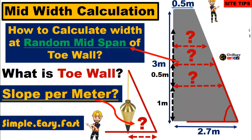Hello guys, welcome to my channel Saveology, the study of Saveal Engineering. In this video, we are going to calculate the mid-width at random heights of a toe wall. We will answer how to calculate mid-width at random distances and random heights, discuss what is a toe wall, and how to calculate slope per meter. This is going to be very simple, easy and fast. Watch the complete video for better understanding. If you are new to my channel, please subscribe and press the bell icon to get video updates.